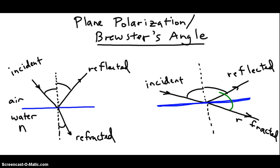So you can see where this is going. There is a sweet spot between the two cases I've drawn, where the angle between the reflected and refracted rays is exactly 90 degrees. To get that angle to be exactly 90, you have to send in the incident beam at just the right angle — not too small, not too big, somewhere in between.